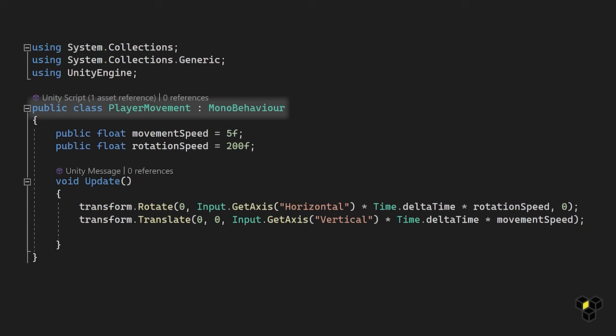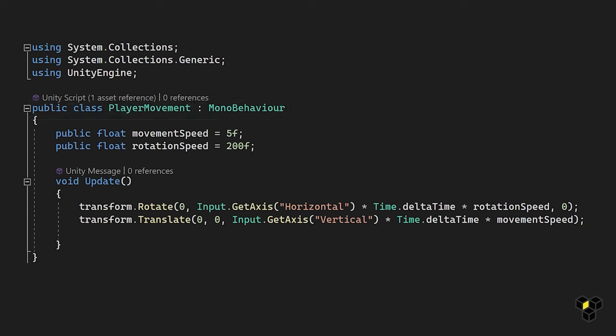Next we have our public class. The public keyword means anything anywhere has direct access to it. Private on the other hand means only members of this class and its children have access to it. Classes are like blueprints for your objects — in Unity all of your scripts will begin with a class declaration. Unity automatically puts this in the script. This class shares the name as the script file it's in. Then MonoBehaviour is the base class from which every Unity script derives. Then we have our variables, which are containers that hold information for us.